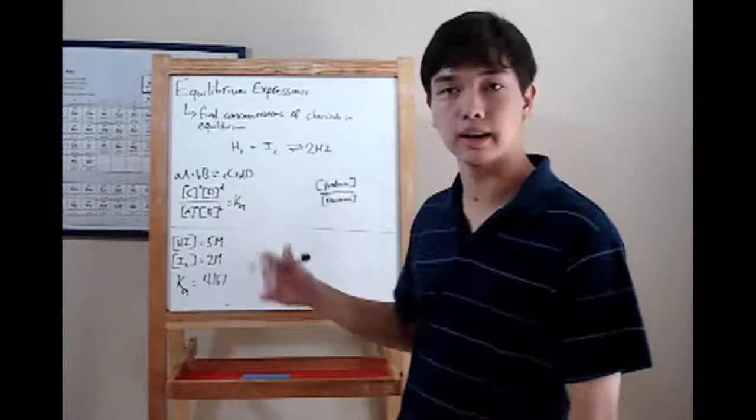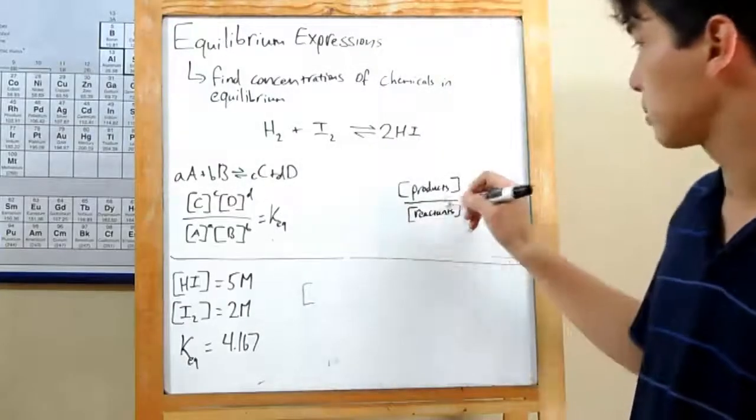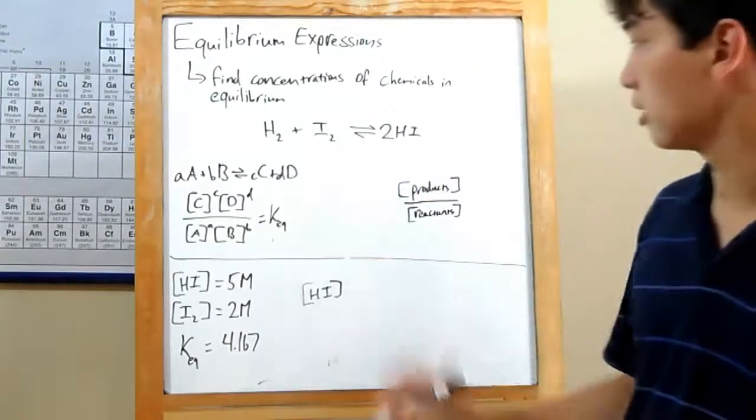Let's use this in an equilibrium expression. Writing it out, first is the concentration of your products on top, HI, raised to the power of their coefficients, 2.